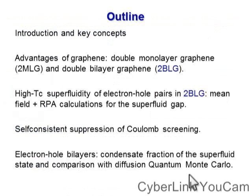The outlines of this lesson are the following. First of all, I'm going to introduce introductory and key concepts. Then I'm going to present and list the clear advantages of graphene materials against other possibilities, and specifically compare the double monolayer graphene case with the double bilayer graphene devices proposed by us. I'm going to then discuss the possibility to reach high TC superfluidity of electron-hole Cooper pairs in double bilayer graphene, shown by means of mean field plus random phase approximation calculation for the superfluid gap in the ground state.